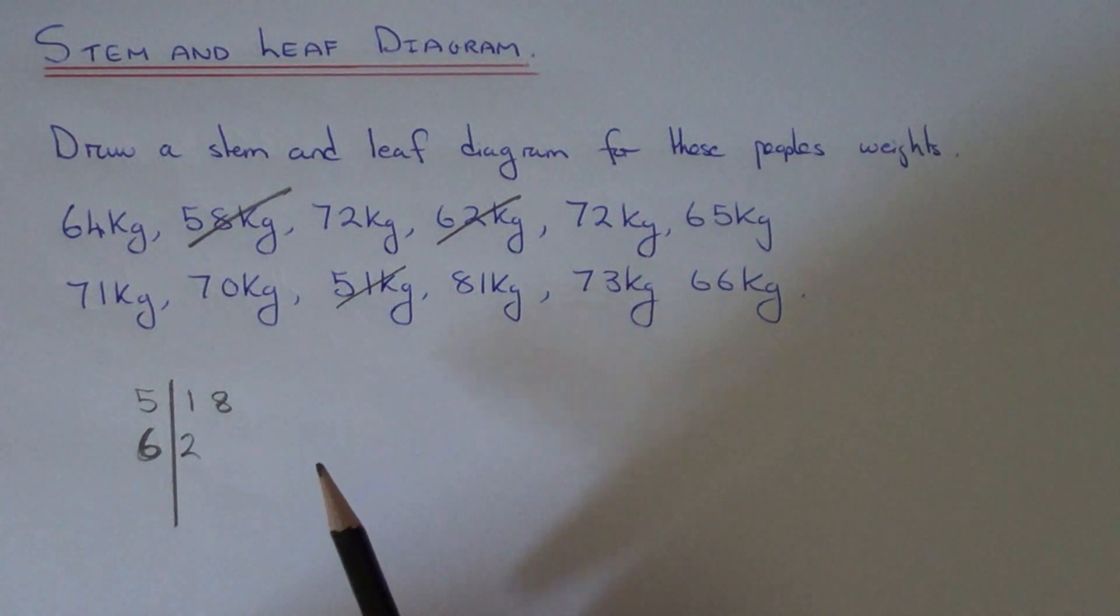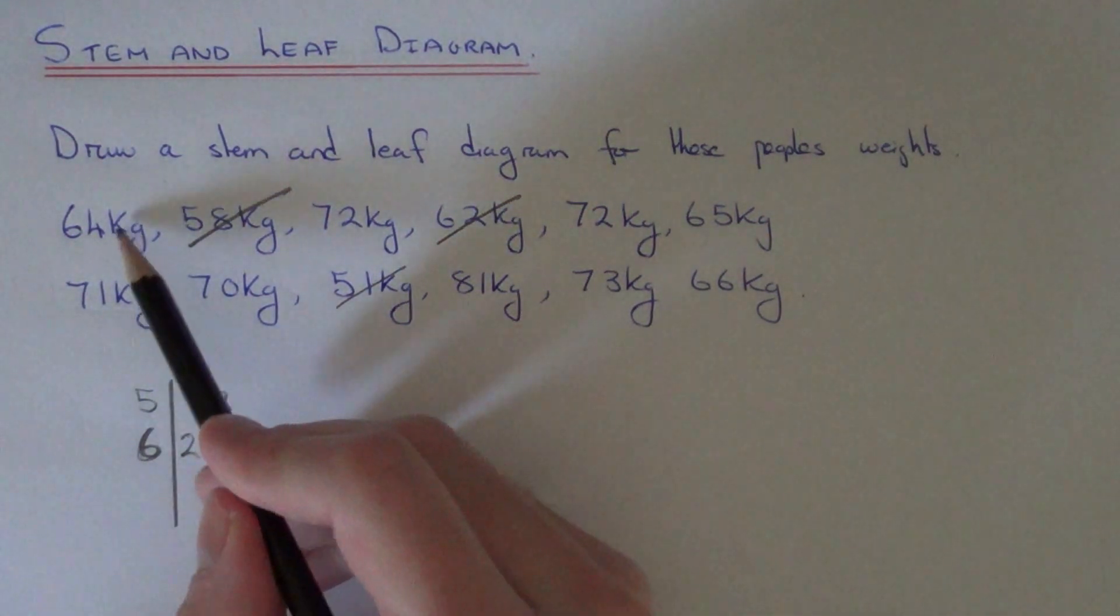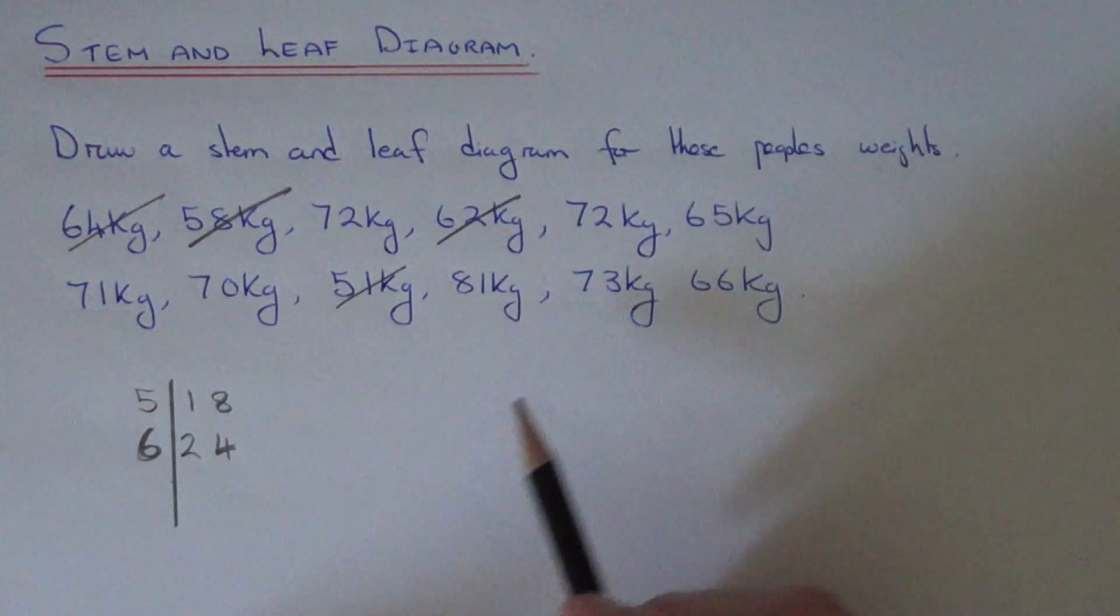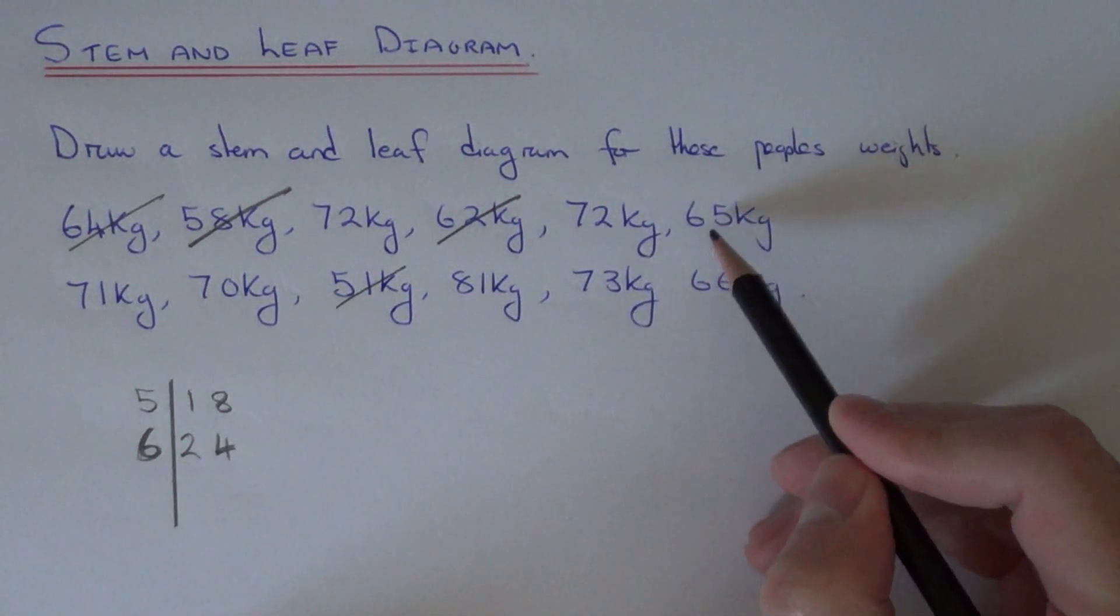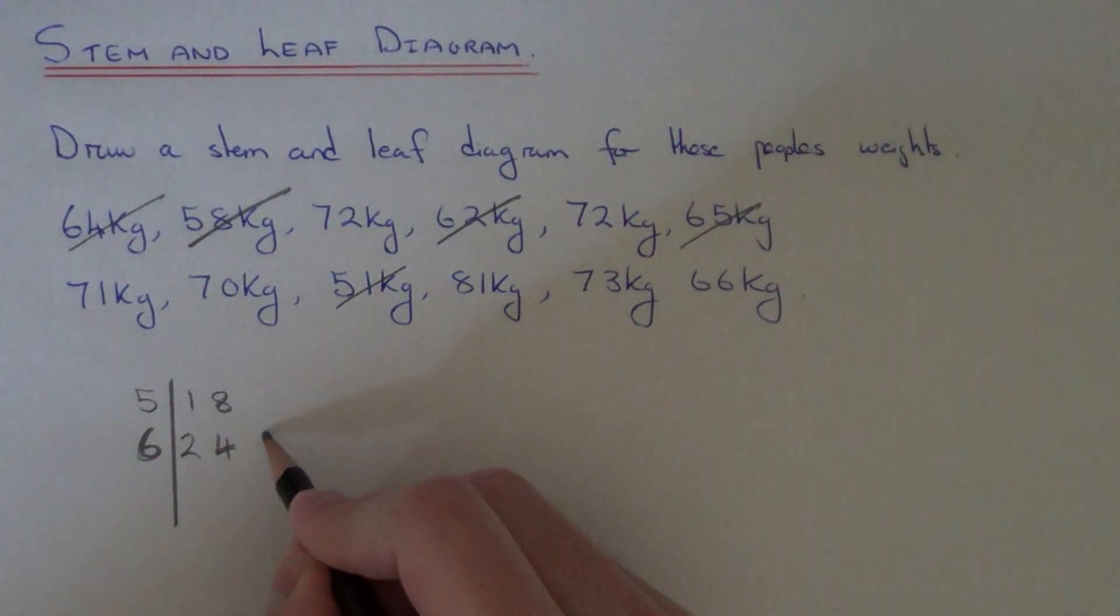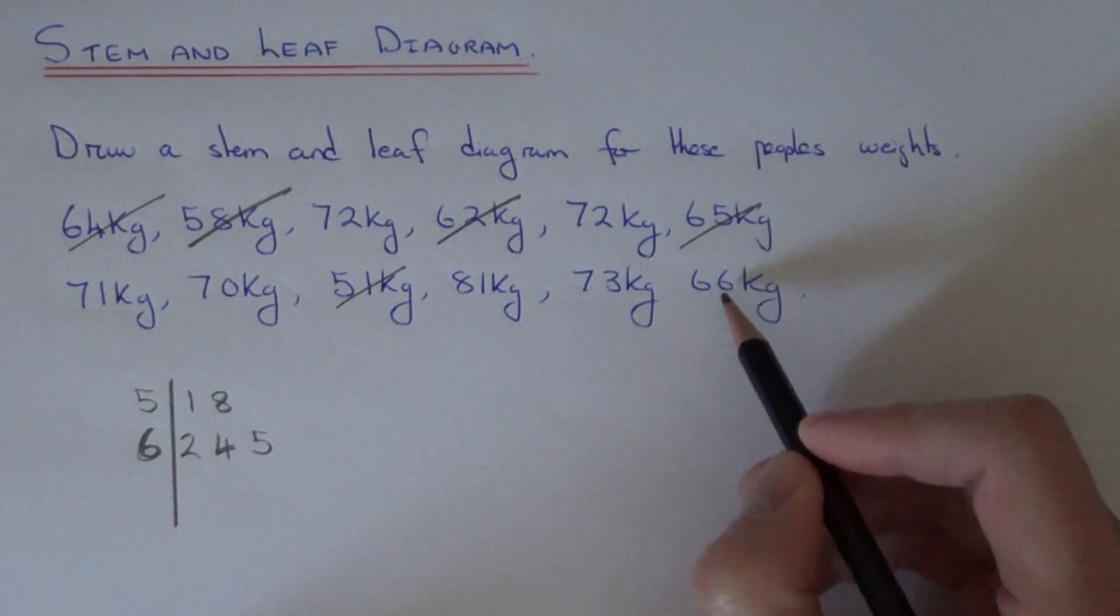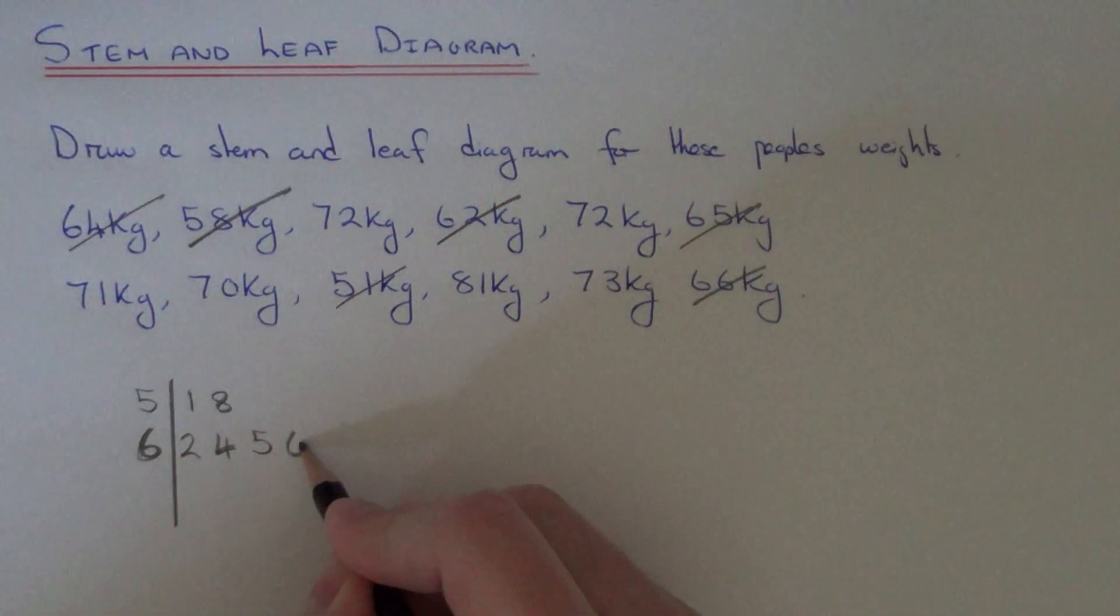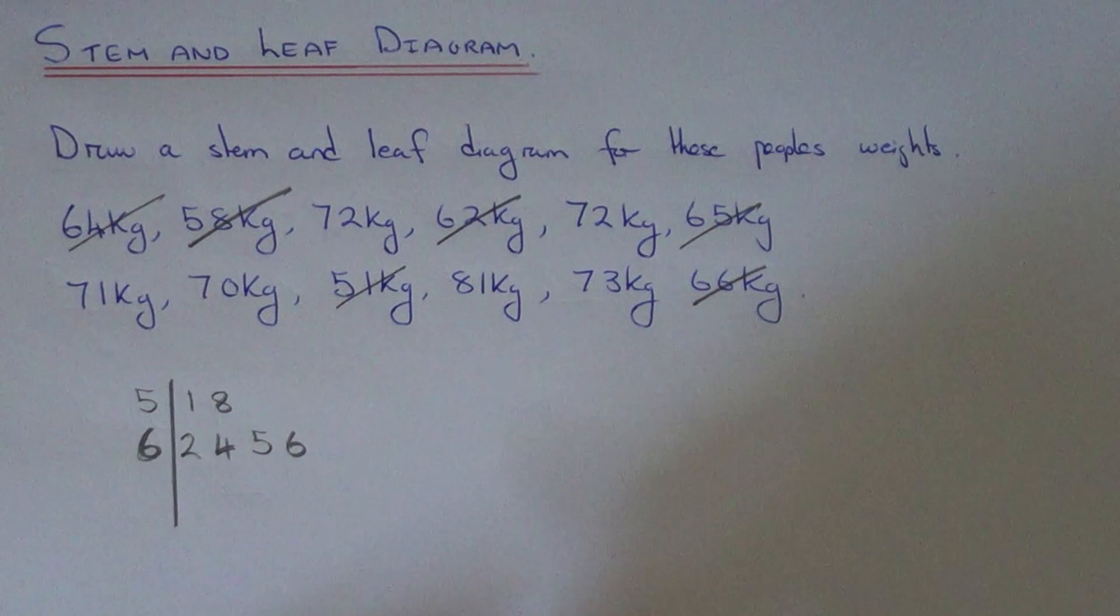Our next biggest one is 64, so we just drop the 4 there. Our next one is 65, so we put a 5 here. And we've got one final one which is 66, so we drop the 6 here. That's all the 60s done.